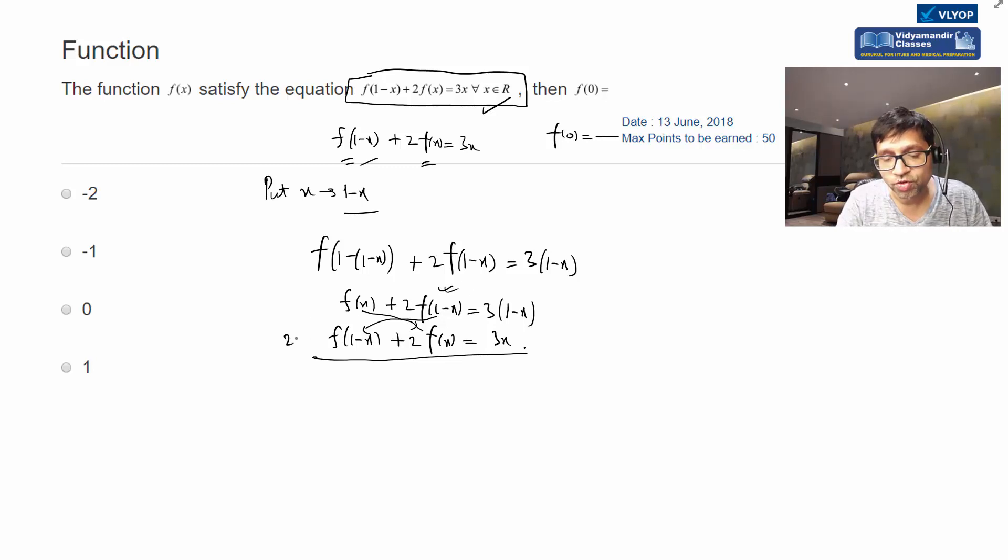So I'll multiply the first equation by 2. I'll multiply the second equation by 1, so that this becomes the same as this and cancels. It will become f(x) minus 4f(x).